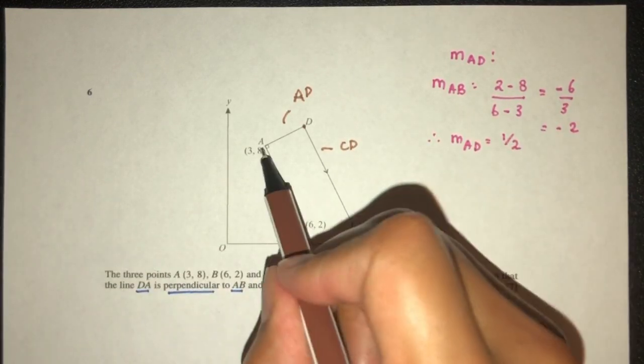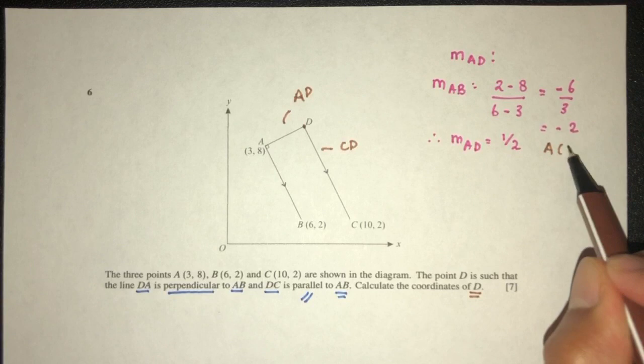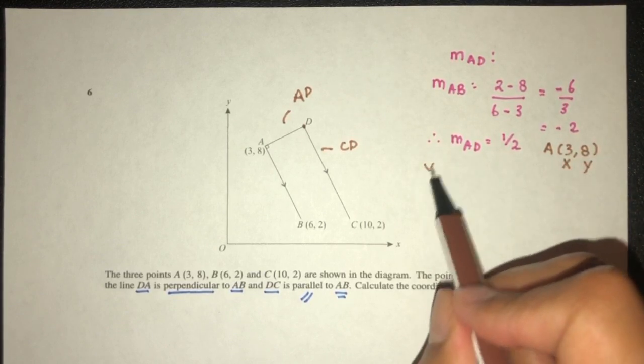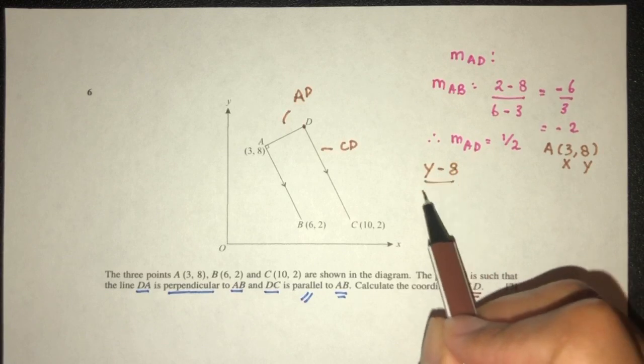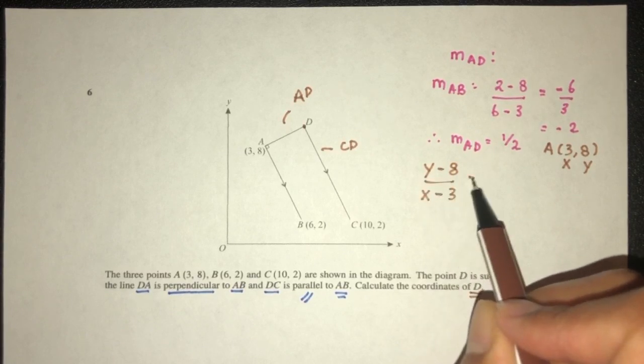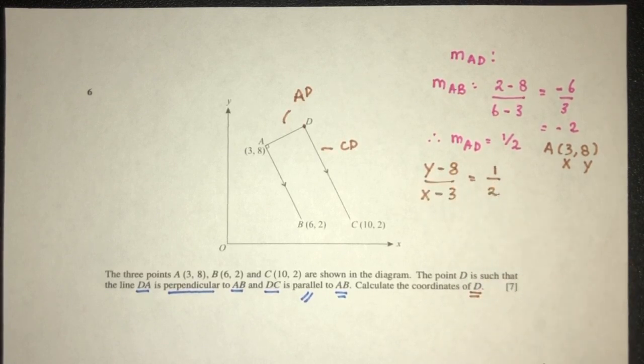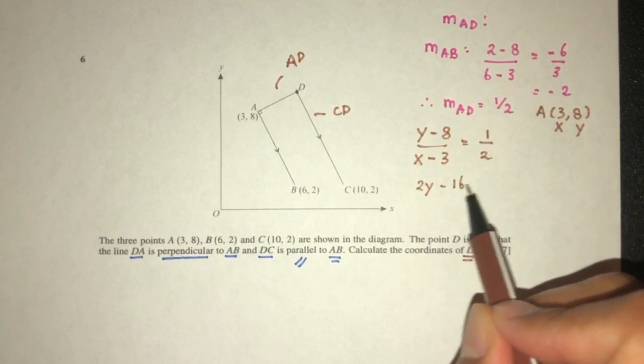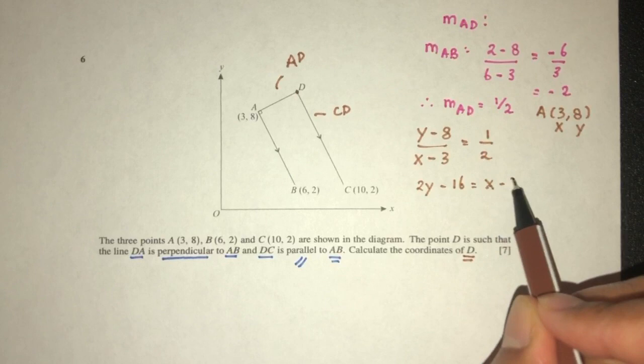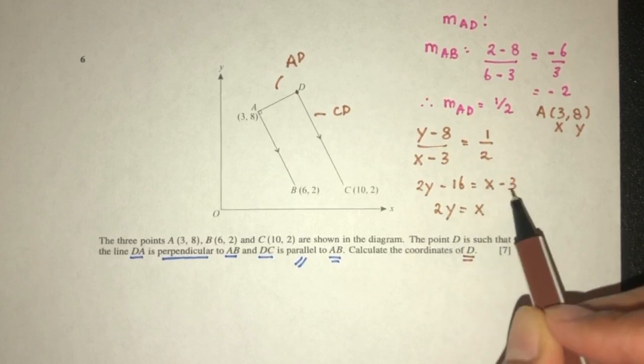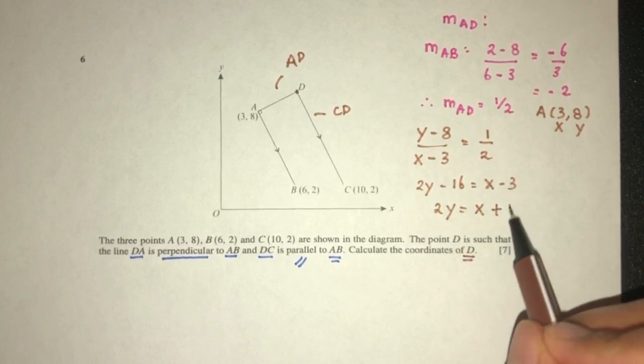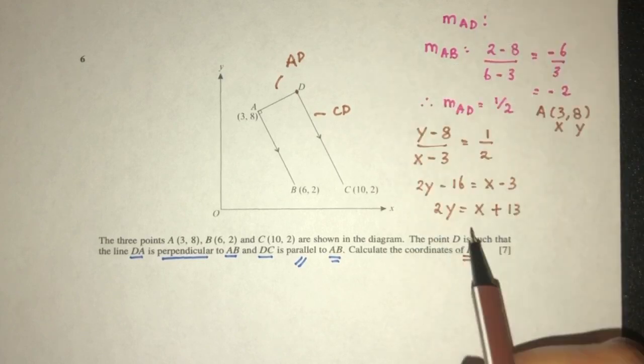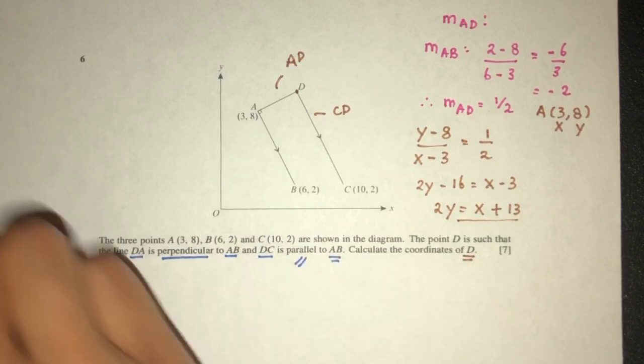Here we have a passing point, which is A at 3, 8, that is X and Y. Y minus 8 over the value of X minus 3, that should be 1 over 2. Cross multiply, you have 2Y minus 16 equals X minus 3. So 2Y equals X minus 3 plus 16, which should be X plus 13. This is your equation for your line AD.